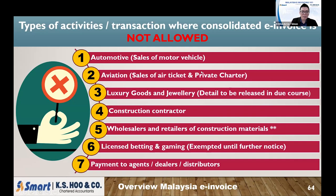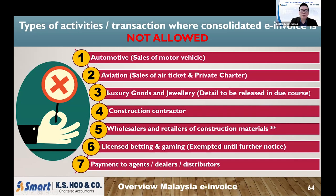The next is the sale of air tickets. Next time when you buy an air ticket from MAS or AirAsia, you will need to key in all your information — your name, IC number, tax number, and email address — in order for them to issue an e-invoice to you, because they cannot issue a normal invoice. The third is jewelry, gold, and silver. This industry is currently mentioned as not allowed to issue consolidated invoices, but the details still need to wait for the government to announce what type of code qualifies as jewelry code and whether there are any criteria or amounts. We still need to wait for further updates from the income tax.